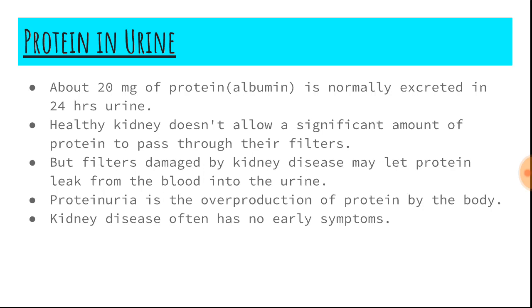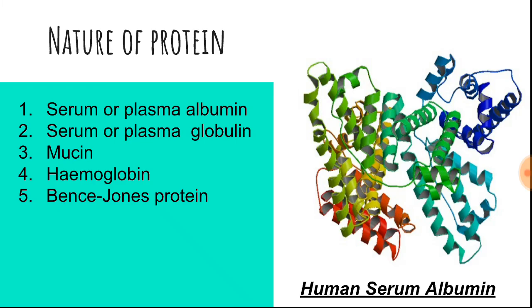Generally, kidney disease often has no early symptoms. Regarding the nature of protein, five types of protein are found in urine samples: number one, serum or plasma albumin; number two, serum or plasma globulin; number three, mucin; number four, hemoglobin; number five, Bence Jones protein. The commonest urinary protein is albumin, hence the term albuminuria, but proteinuria is the more scientific term.